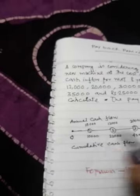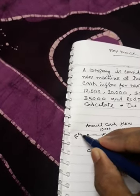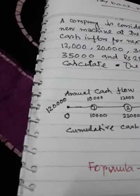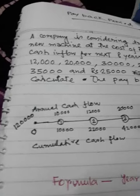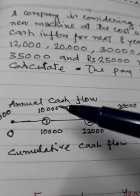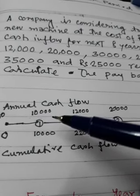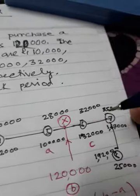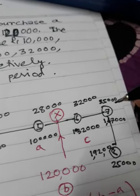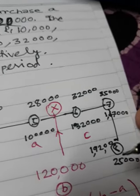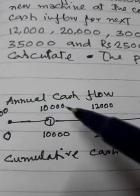What do we do? Our initial point is zero. We have to invest 1,20,000. The cash flow in the first year is 10,000; second year 12,000; third year 20,000; fourth year 30,000; fifth year 28,000; sixth year 32,000; seventh year 35,000; and eighth year 25,000. This is the annual cash flow.